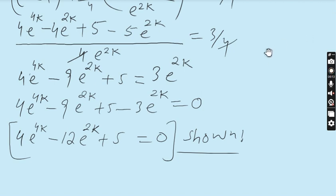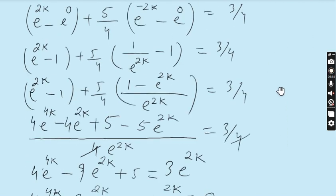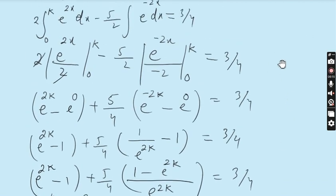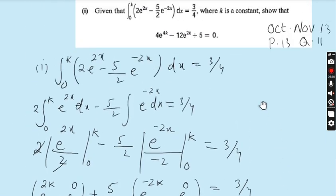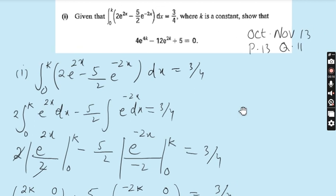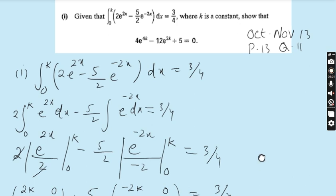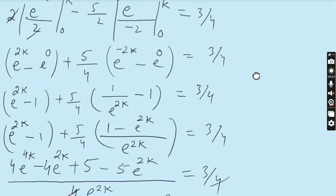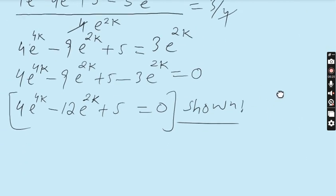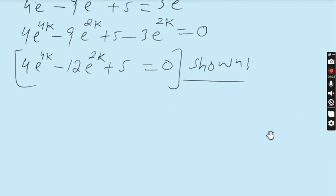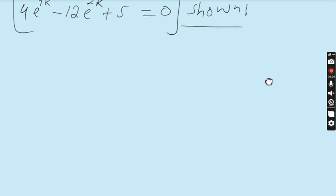You can see that Part 1 asked us to show that 4e^(4k) − 12e^(2k) + 5 = 0, and we have now achieved the target.